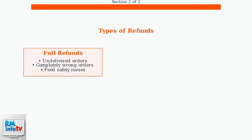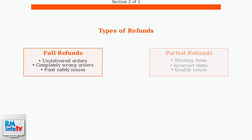DoorDash offers three main types of refunds based on the issue. Full refunds are provided for undelivered orders, completely wrong orders, or food safety concerns. Partial refunds cover missing items, incorrect items, or quality issues where only part of your order was affected.